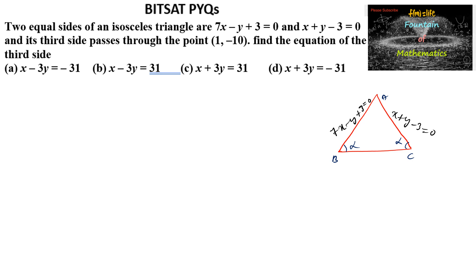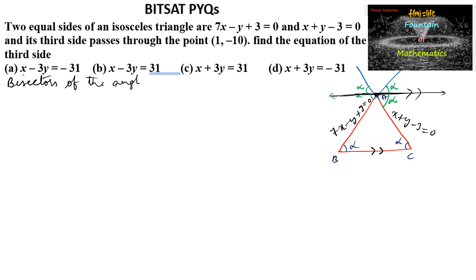So if we extend these two sides, we can find one angular bisector which is parallel to the third side. Since if it is parallel, the angles are equal — here alpha, and here also alpha. So this line is the angular bisector of the two equal sides. Let us find the angular bisectors of the angles of the two equal sides of the isosceles triangle.